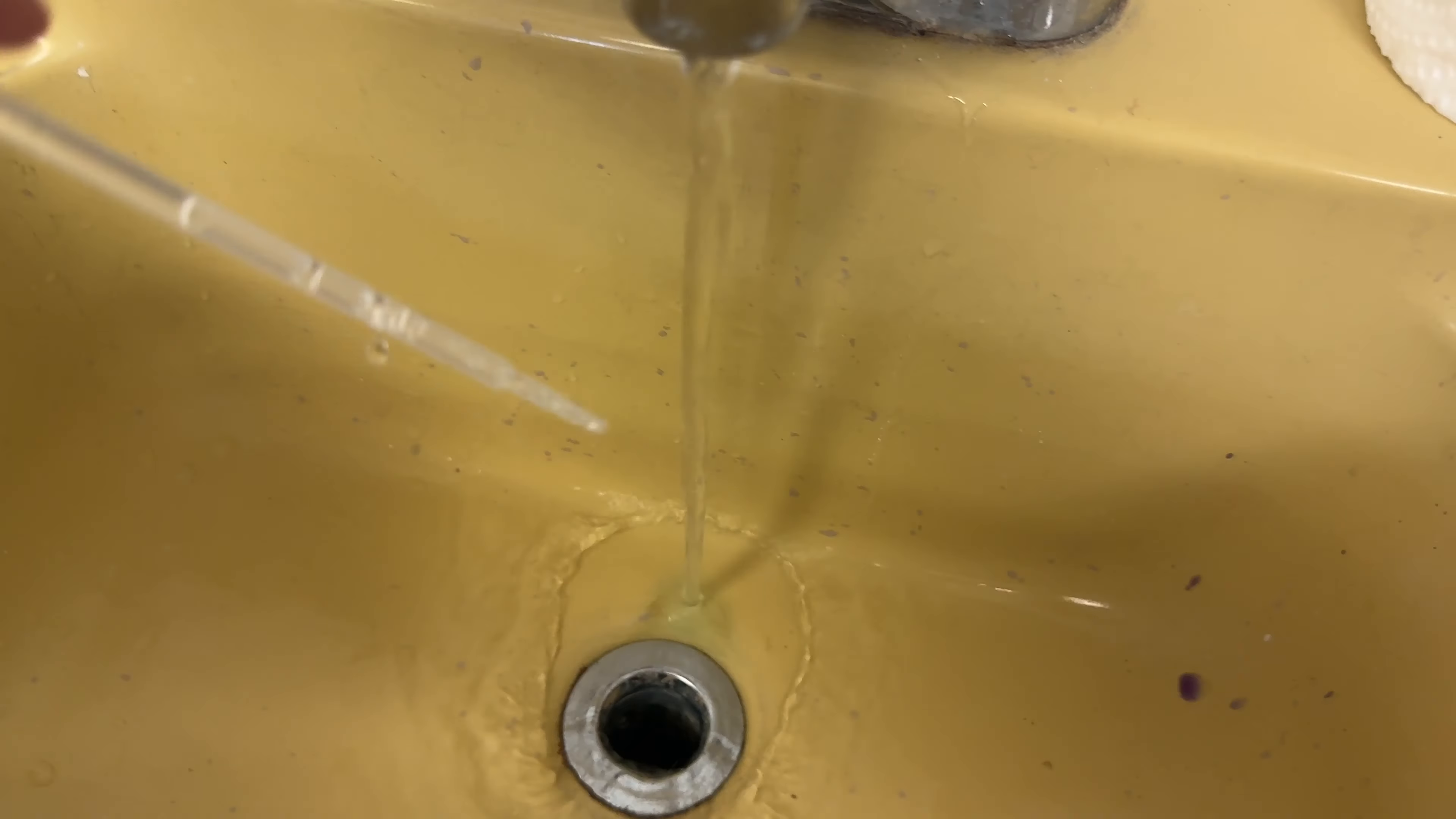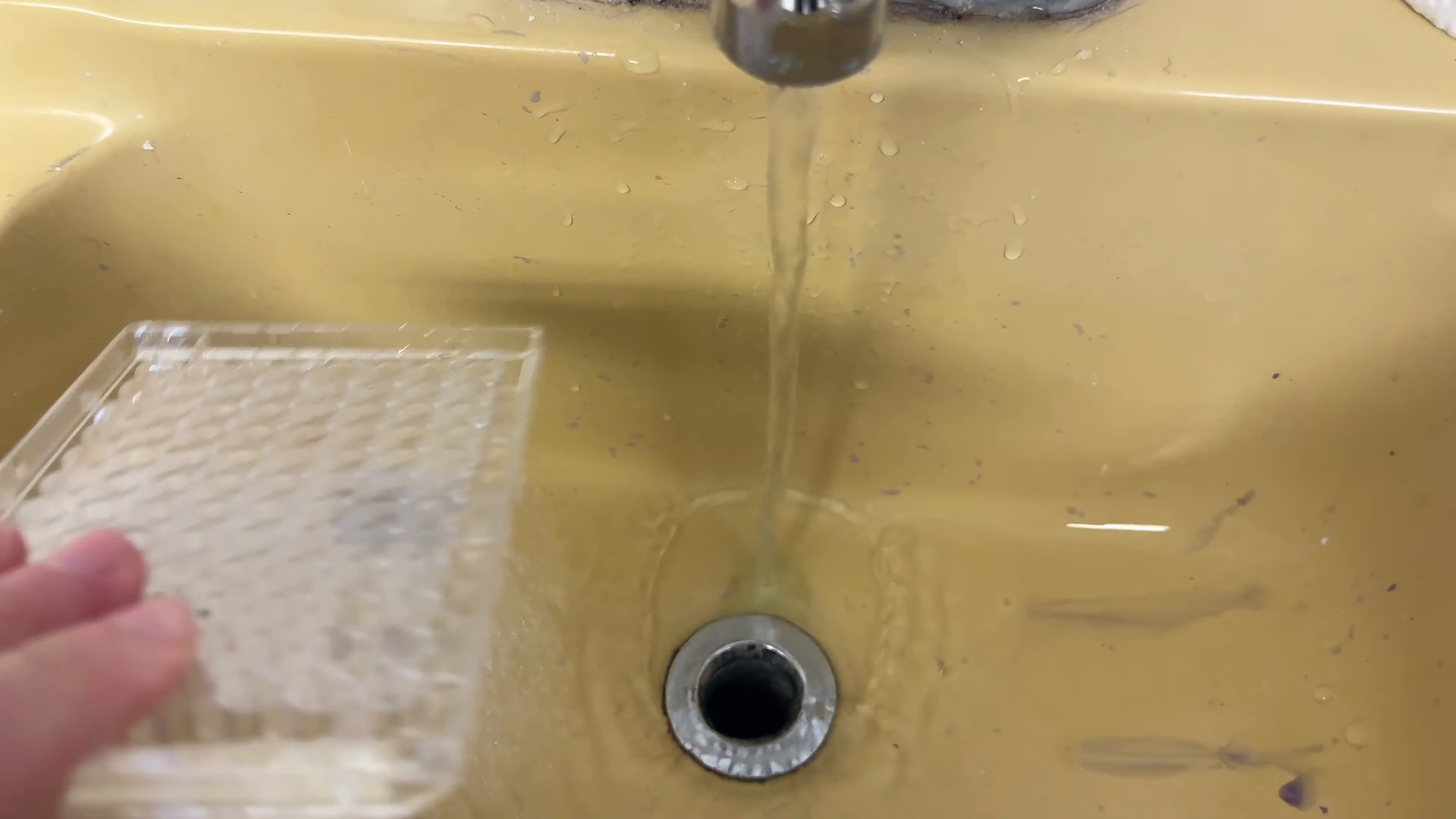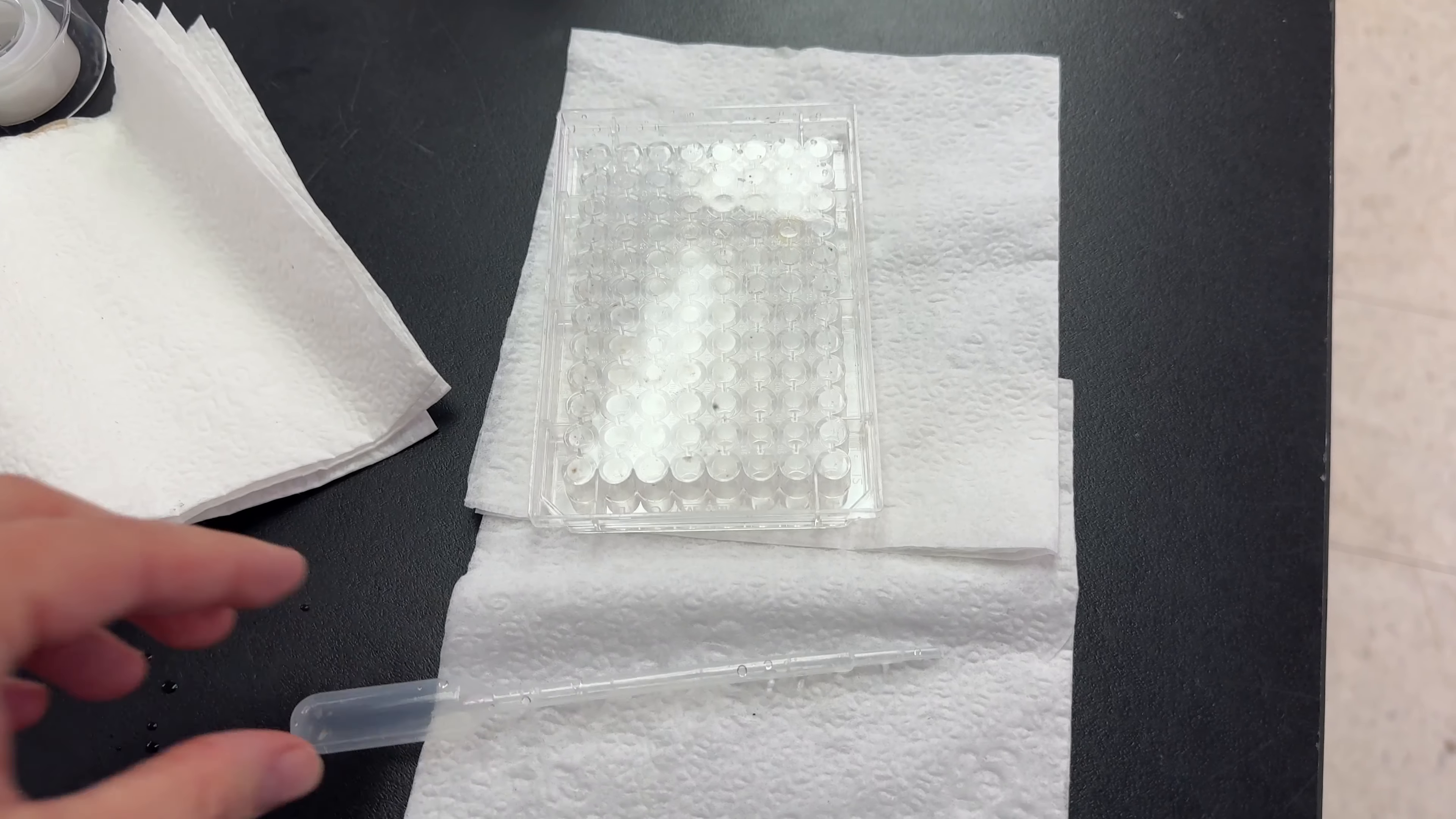After the lab is over, be sure to clean up all your materials and rinse out your pipette. For your reaction plate, when you are rinsing it out, be sure to turn it upside down and swiftly shake out the extra water. When you're all finished, be sure to turn everything upside down on a paper towel to dry.